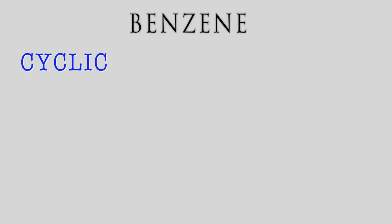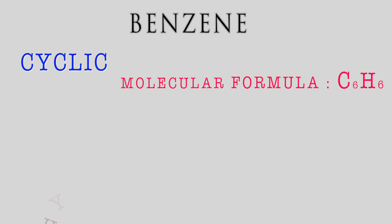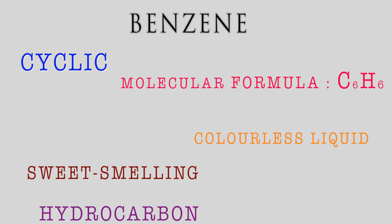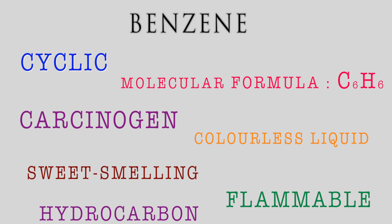Hello and welcome to this video on year two of A-level chemistry: an introduction to benzene. Benzene is a molecule with a cyclic structure and a molecular formula of C6H6, with the six carbon atoms joined in a ring. It is a colorless liquid, sweet smelling, and unfortunately flammable. Even more unfortunately, it is a carcinogen.